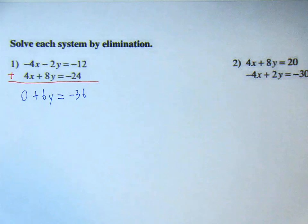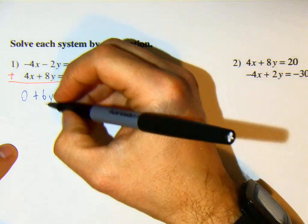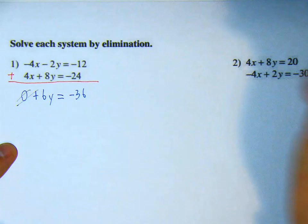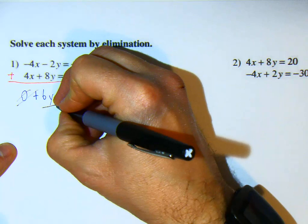And there we have figured out how to get rid of one of our variables. Now we just need to solve for y. We can divide, this will cancel out, plus 0, it's gone. We can divide by 6 on both sides and get y is equal to negative 6.